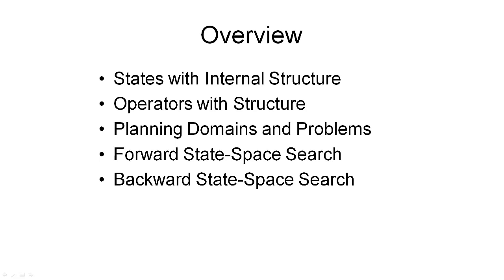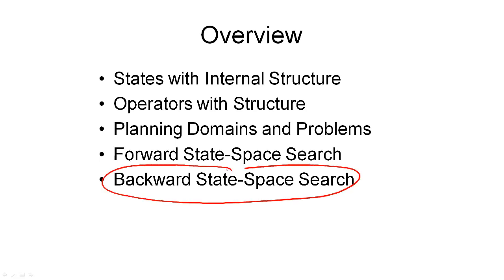In the algorithm we've just seen, search states are exactly those states that are world states in the planning problem. States are sets of ground atoms. The algorithm then searched forward from the initial state through all the reachable states until it comes across a goal state. The algorithm we will look at next is backward state space search. In this algorithm, we'll start from the goal and search backwards through the state space until we reach the initial state. This is quite straightforward and very similar to forward search as you will see.